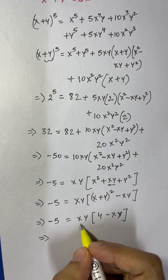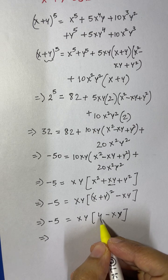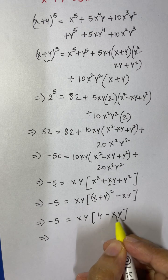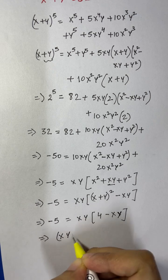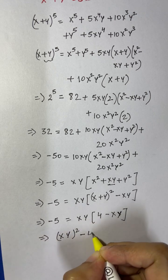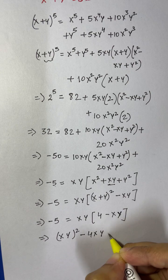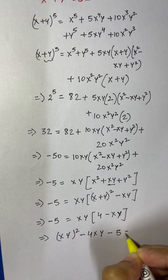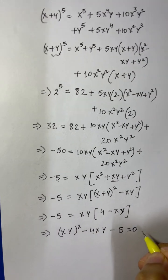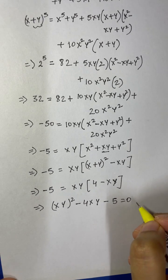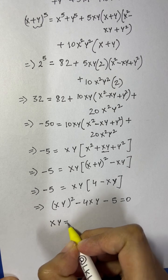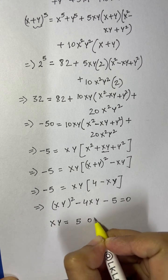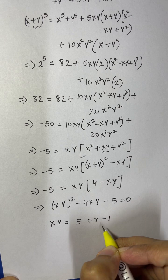Expanding inside: 4xy minus (xy) squared. Bringing to one side: (xy) squared minus 4xy minus 5 equals zero. Solving this quadratic equation in xy gives xy equals 5 or xy equals negative 1.